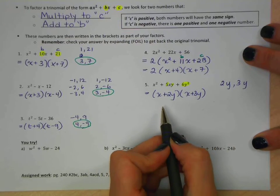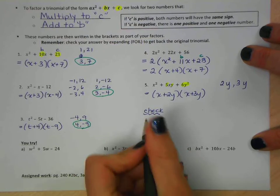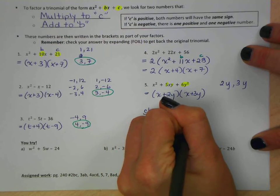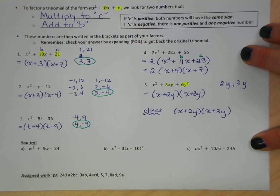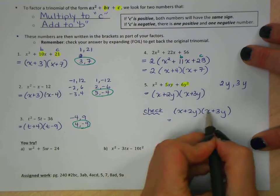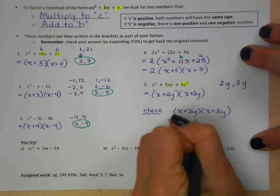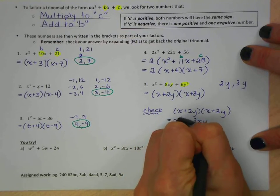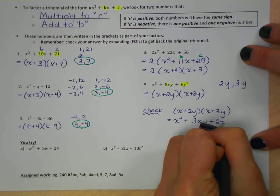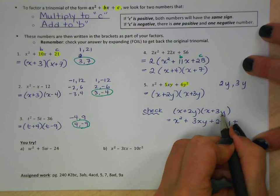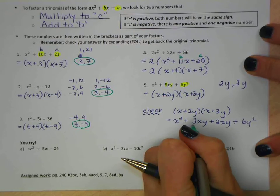Now, if we're not sure about this, we can always do a check. And check just means using FOIL to get back to our trinomial. So let's try it. So firsts, x times x is x squared. Outsides, x times 3y is 3xy. Insides, 2y times x, so 2xy. And lasts, 2y times 3y is 6y squared.